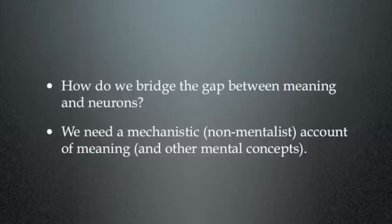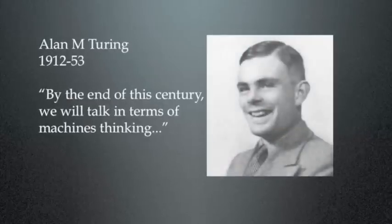So how do we bridge the gap between meaning and neurons? We need a mechanistic, that is to say a non-mentalist, account of meaning and other mental concepts. And in order to do this, we go back in time a little bit to British mathematician Alan Turing, who died in 1953. Turing had a tragic history. He was, of all people on Earth, he probably did more to win the Second World War for the Allies, because he broke the German Enigma Code. However, in 1953 he was arrested for being gay and was sentenced, and he committed suicide rather than accept the sentence. But he said in a paper published, I think in 1952, that by the end of this century, that is by the end of the 20th century, we will talk in terms of machines thinking. That was very, very radical. He had jumped a long way ahead of everybody else, and of the conceptual tools available at the time.